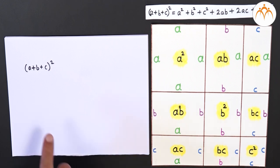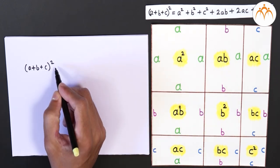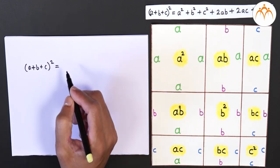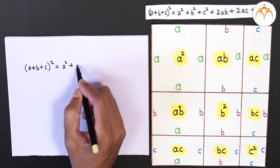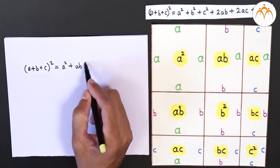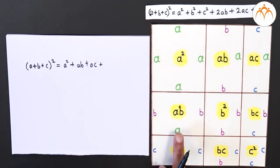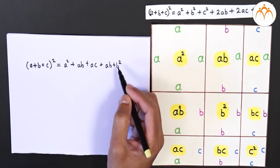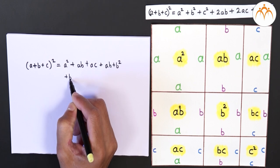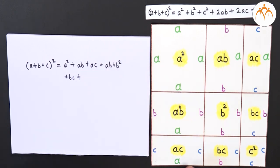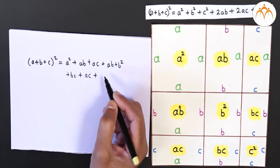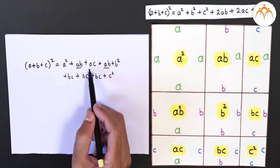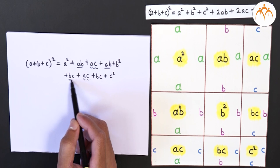We can write (a+b+c)² equal to the sum of the areas of each of these small pieces: a² + ab + ac + ab + b² + bc + ac + bc + c². You can see that the term ab appears twice, similarly the term ac also appears twice, and the same is true for the term bc.